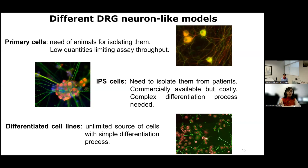Primary cells are the closest models to in vivo because they are directly taken from animals, but animals must be sacrificed and the low quantities obtained limit the assay throughput. IPS cells are isolated from patients, but they are expensive and the differentiation to achieve cells with the phenotype of interest is a complex and long process. Differentiated cell lines are cells that proliferate and, after a simple differentiation process, acquire the phenotypic features of interest.